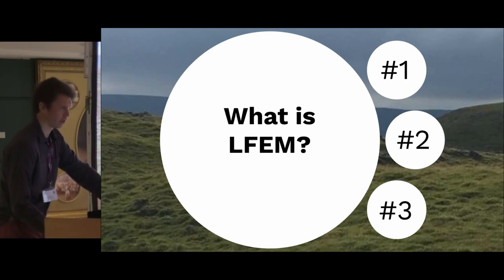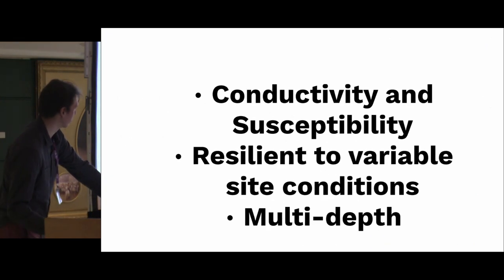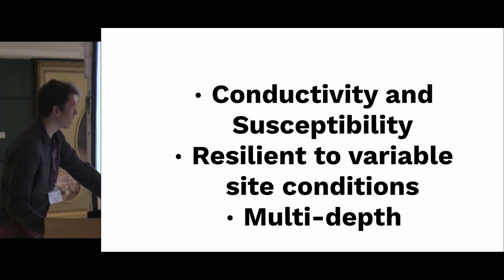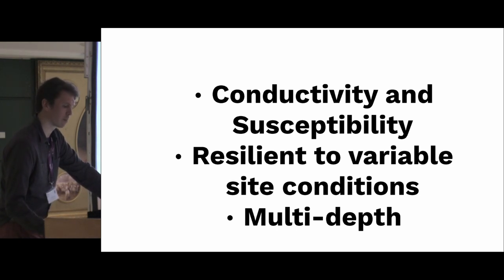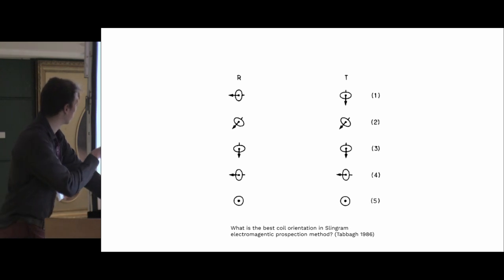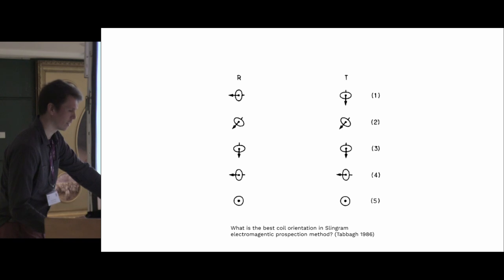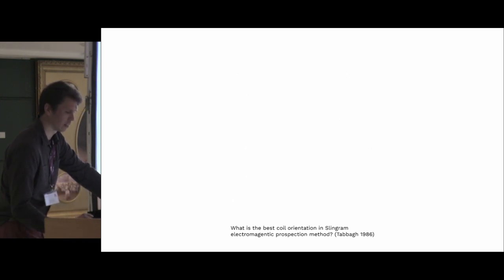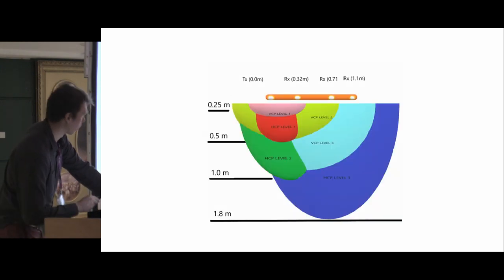For those of you who don't know, electromagnetic survey allows you to collect conductivity and susceptibility data all at once. It's resilient to variable site conditions to a point, so you don't have to worry about things like high contact resistance that you would with a traditional earth resistance survey. You can survey in uplands, in lowlands — basically as long as you can walk, you can survey. The other great benefit is it provides multi-depth data that was previously only available with GPR. Briefly, how it works: we have transmitting coils and receiving coils, we generate an electromagnetic field, and then we measure its decay with our receiver. With multiple receivers we can survey multiple depths simultaneously.